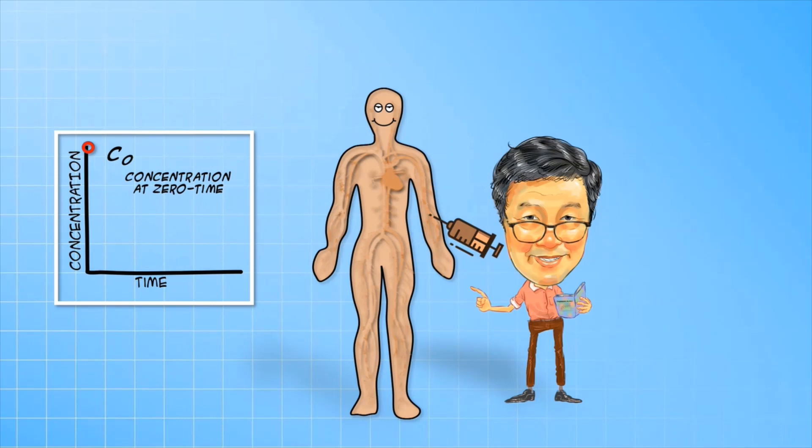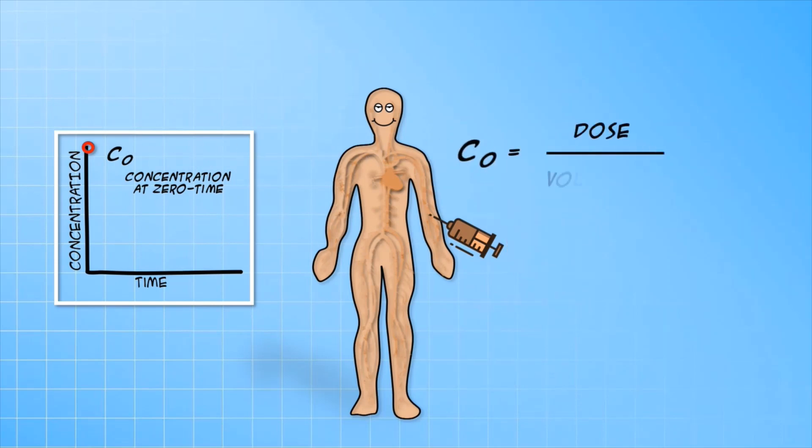At this theoretical point in time, the concentration of the drug is denoted as CNOT or the concentration at zero time. At this point in time, the concentration is just the administered dose of the drug divided by a theoretical volume of distribution. So there is really no mystery to the concept of the volume of distribution. It is merely a volume term assuming the entire body can be represented by the plasma, which relates the administered dose to the observed concentration at zero time.